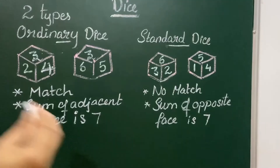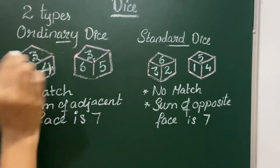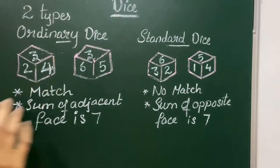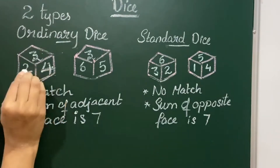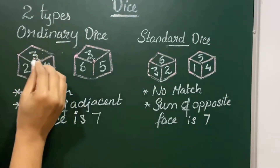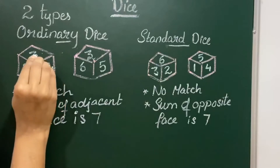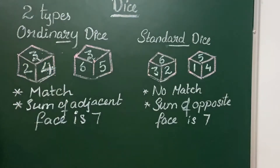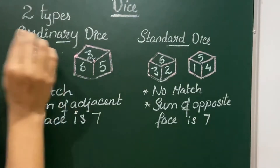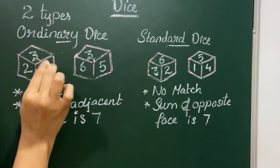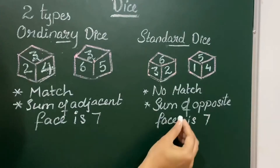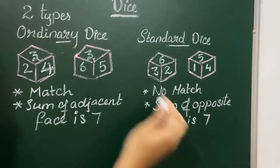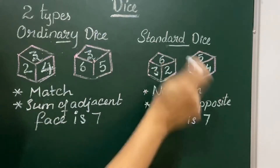We can also see that if you add any adjacent face it will be 7 — and if it gives 7, that is ordinary dice. For example, if the sum of two adjacent faces is 6 or 5, not 7, it is not standard. But if the sum of opposite faces is 7, that is standard dice.